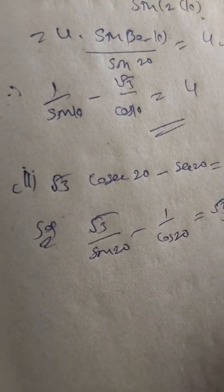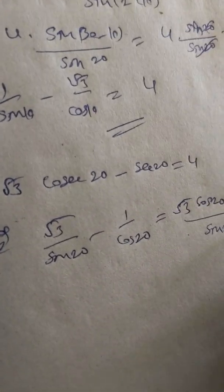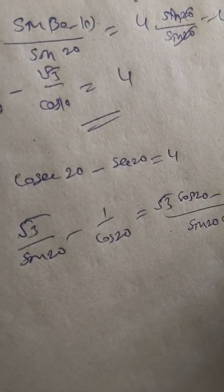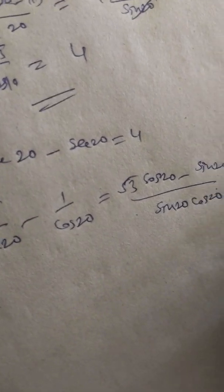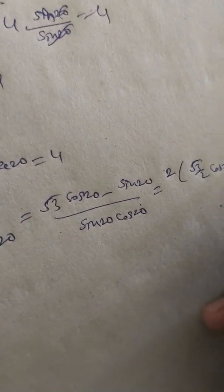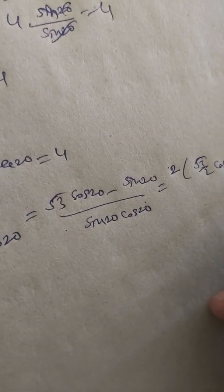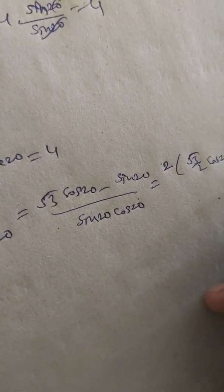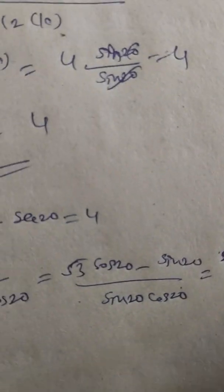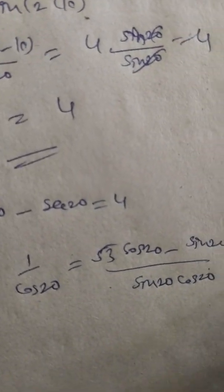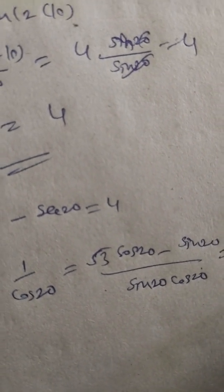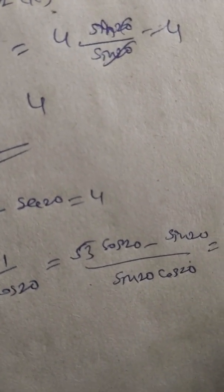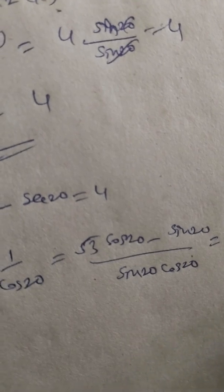Multiply numerator and denominator by 2: we get 2 times [√3/2·cos(20°) minus 1/2·sin(20°)] divided by 2·sin(20°)·cos(20°).